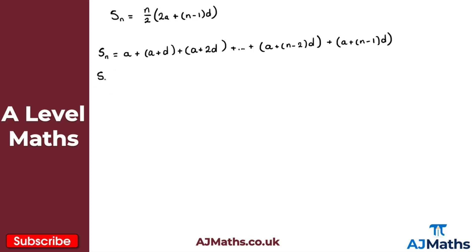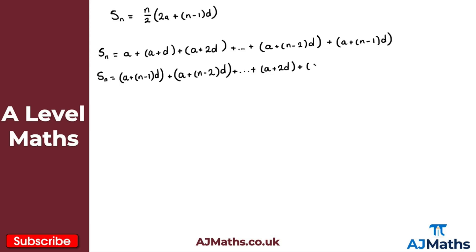Just like the previous example, we're going to consider this summation again but in reverse. So Sn in reverse starts with a plus (n minus 1)d as the first term, then a plus (n minus 2)d, continuing until we get to a plus 2d, a plus d, and then finally plus a. Calling this equation 1 and this equation 2, we're going to do equation 1 plus equation 2.